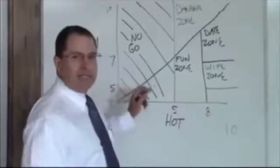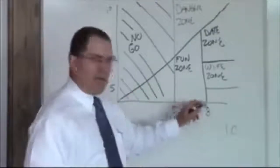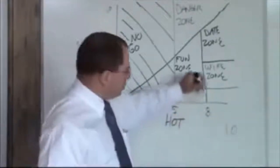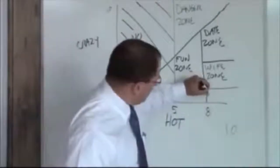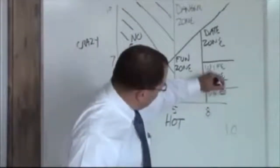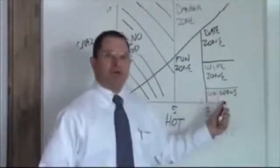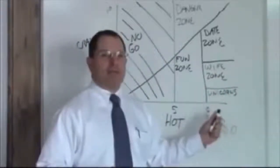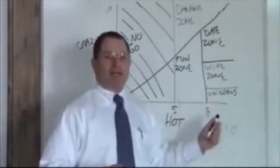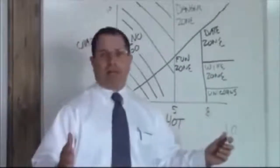Below a five crazy and above an eight hot, this is your unicorn zone. These things don't exist. If you find a unicorn, please capture it safely, keep it alive. We'd like to study it and maybe look at how to replicate that.